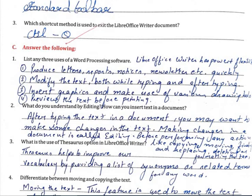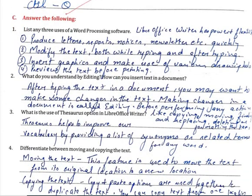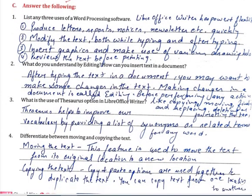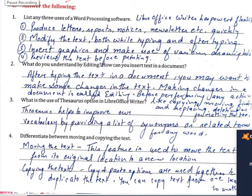Answer the following. List any three uses of word processing software. LibreOffice Writer is powerful and flexible. It can produce letters, reports, notices, newspapers etc. quickly. Second, modify the text both while typing and after typing. Third, insert graphics and make use of various drawing tools. Fourth, preview the text before printing.